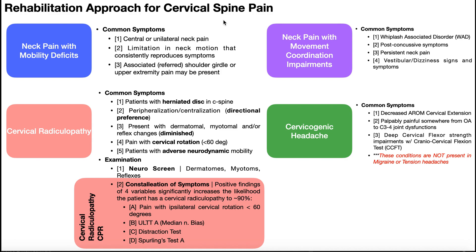When you get a patient who has cervical spine pain, neck pain in the clinic, sometimes it can be kind of challenging to really focus on the right signs and symptoms and get the right treatment that'll help that patient. So to simplify things, they made this rehabilitation approach — this neck pain classification system — where you basically look at how the patient presents and group them into one of four classifications: neck pain with mobility deficits, neck pain with movement coordination impairments, cervical radiculopathy, and cervicogenic headache. Once you have them in one of these classifications, it guides how you actually treat them.